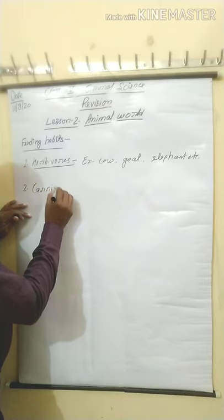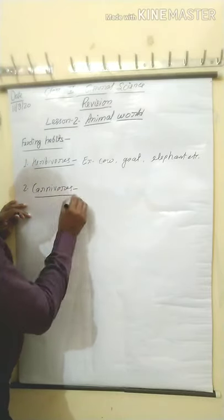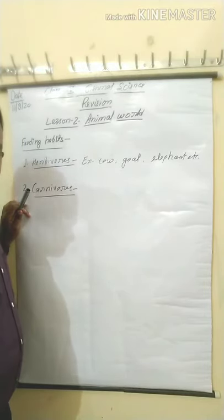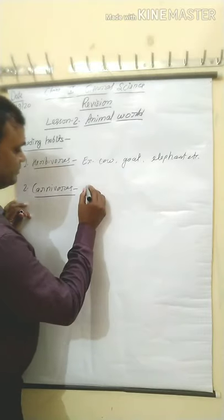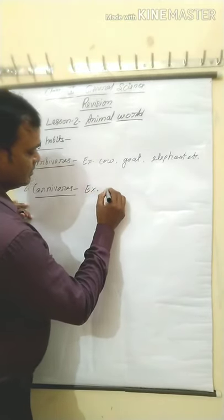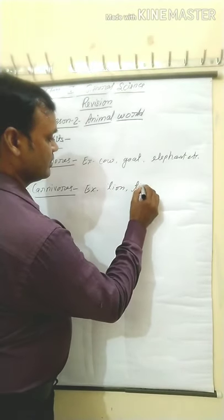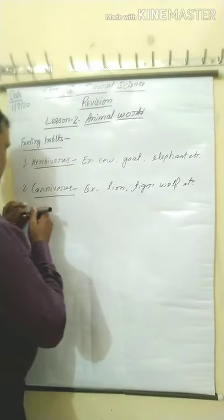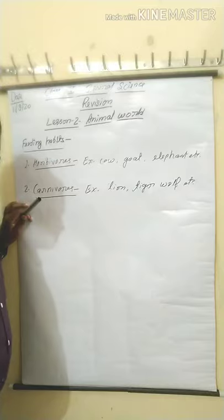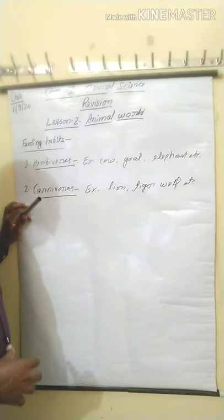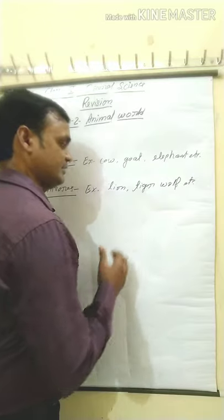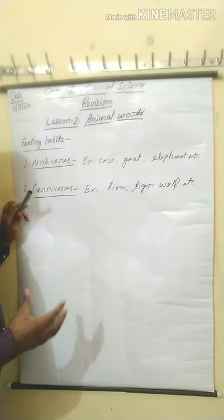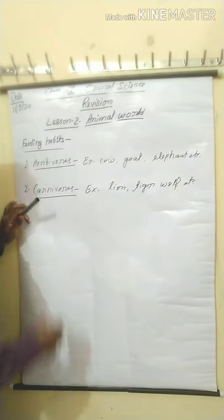Next: Carnivorous animals. What do you mean by carnivorous animals? Animals that eat the flesh of other animals are called carnivorous animals. Examples: lion, tiger, wolf, etc. Their front teeth are pointed — you can say canine teeth are pointed. With the help of their front pointed teeth, they tear the flesh of other animals. Such modification is found in carnivorous animals.